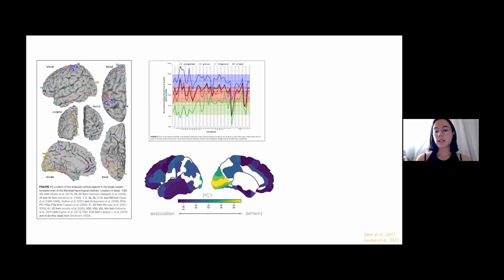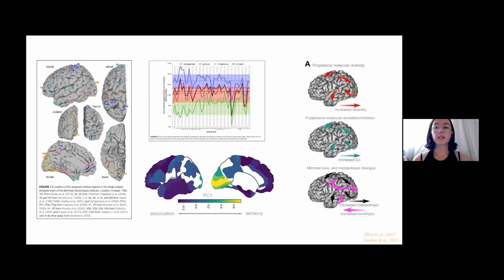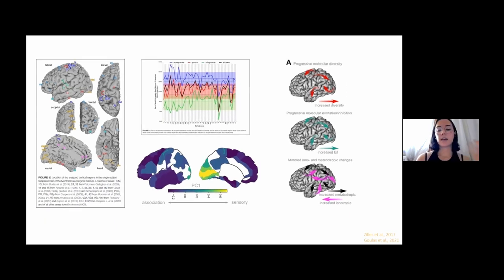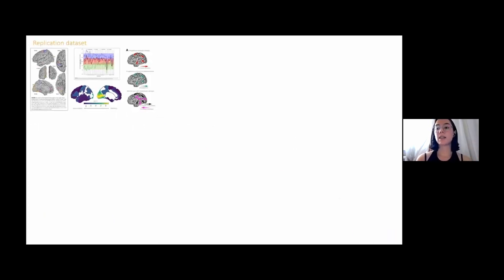Another group, a couple years later, took that same data because it is openly available, found the principal axis of variation and related this to certain molecular attributes like receptor diversity, excitatory inhibitory ratios, ionotropic-metabotropic ratios. Because this data is available, I'll be using it as my replication dataset because it doesn't have full coverage across the cortex.